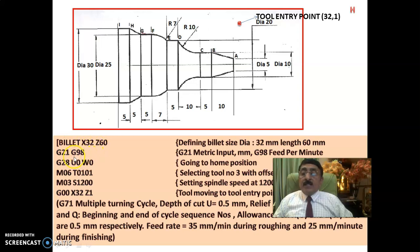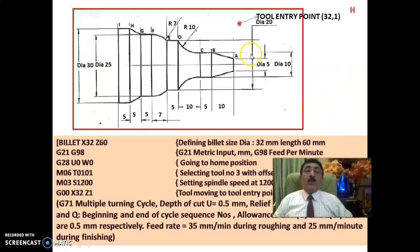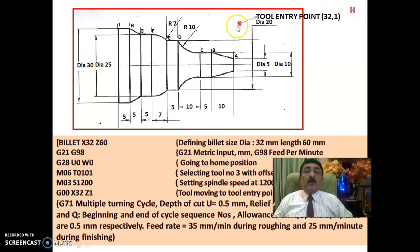The initial settings are: G21, G98, G28 — going to home position. Change tool to T1, change spindle speed to 1200 RPM, then G00 rapid to tool entry position X32 Z1. The billet diameter is 32 mm and length is 60 mm. From home position the tool comes rapidly to X32 Z1, which is 1 mm away from the workpiece.